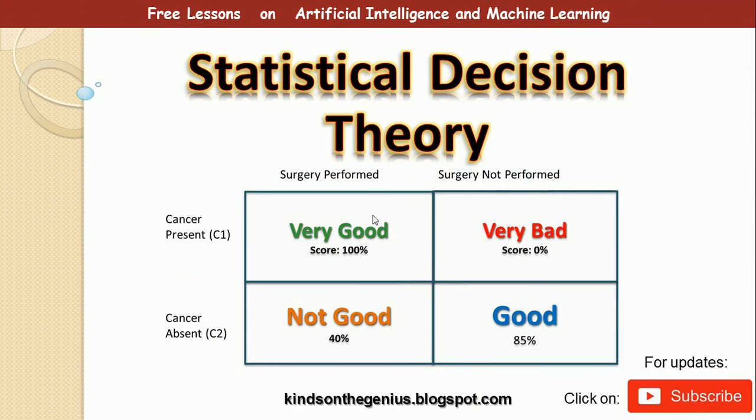Hello, I'm Coynton Degenius and today we are going to discuss statistical decision theory. Statistical decision theory is a very important topic in artificial intelligence and machine learning, and even in real life, statistical decision theory applies to virtually all aspects of our lives.